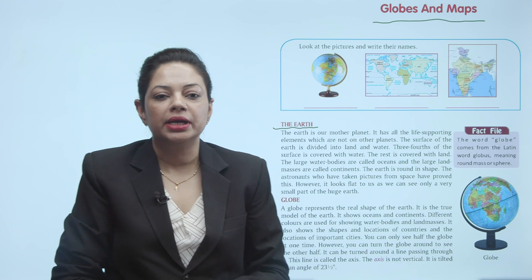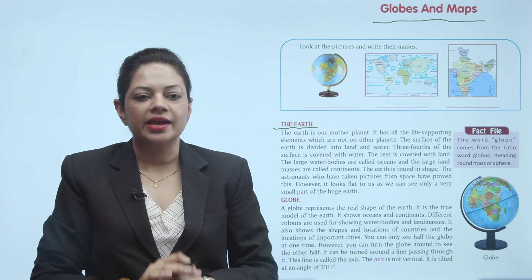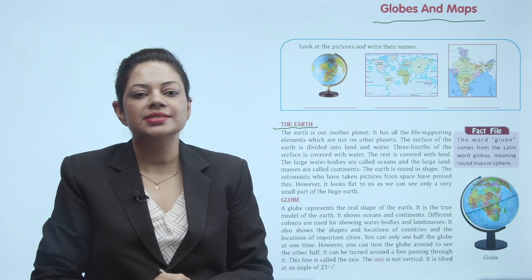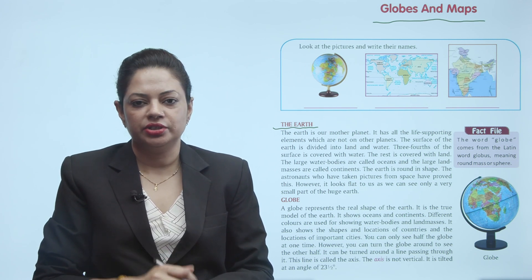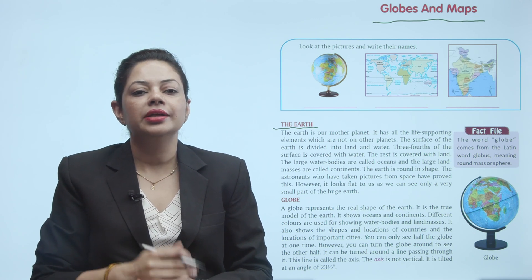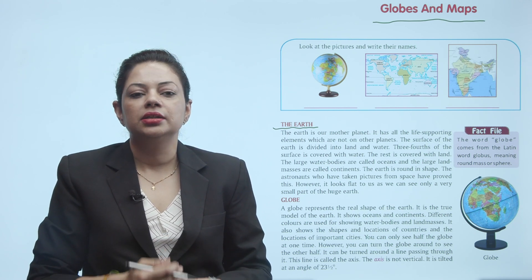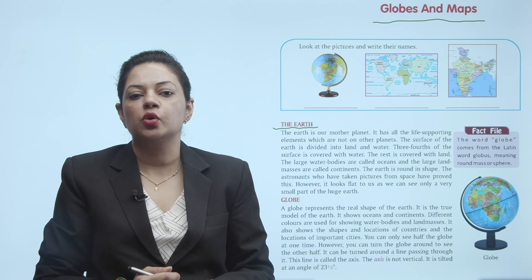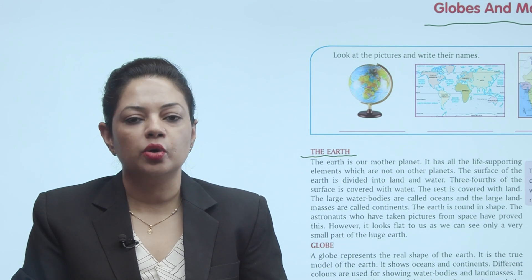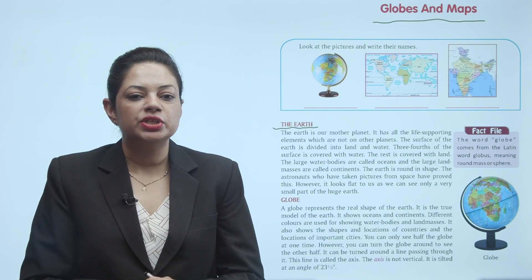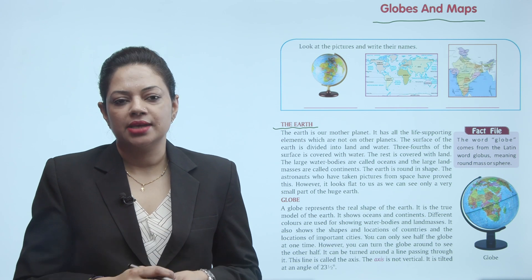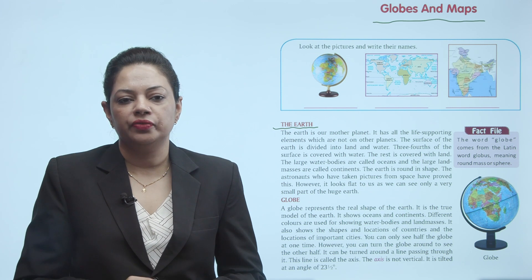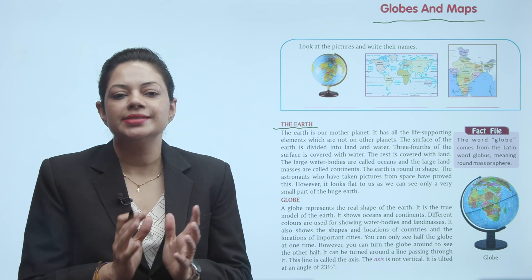The Earth is our mother planet. It has all the life-supporting elements which are not on other planets. The surface of the Earth is divided into land and water. Three-fourths of the surface is covered with water and the rest is covered with land. Large water bodies are called oceans and large land masses are called continents. The Earth is round in shape — astronauts who have taken pictures from space have proved this, however it looks flat to us as we can see only a very small part of the huge Earth.